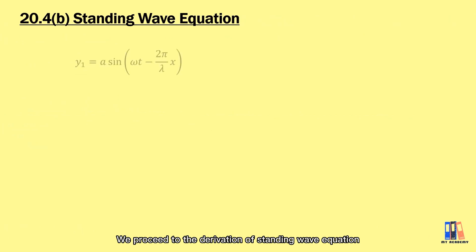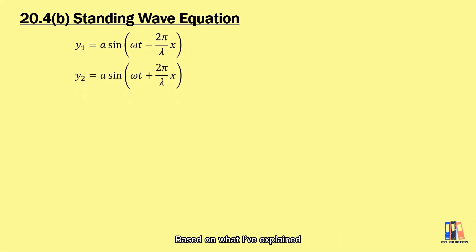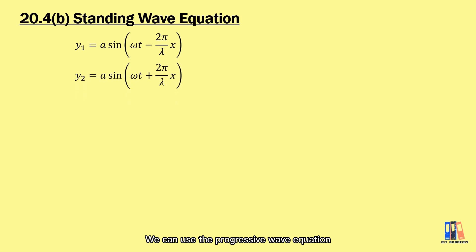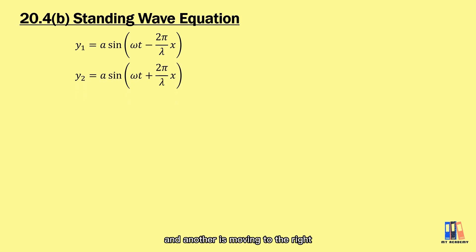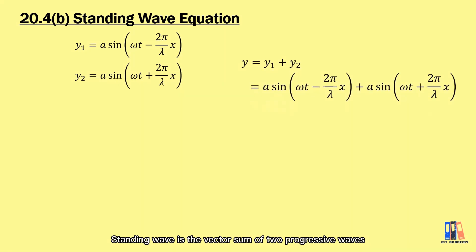We now proceed to the derivation of the standing wave equation. It is formed by two progressive waves of the same amplitude and same frequency but travelling in opposite directions, so we can use the progressive wave equation — one moving to the left and another moving to the right. The standing wave is the vector sum of these two progressive waves, so we add both equations y1 and y2.